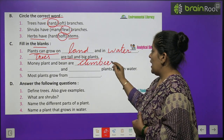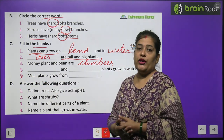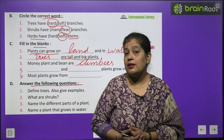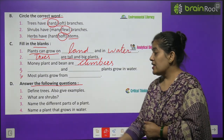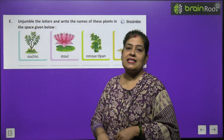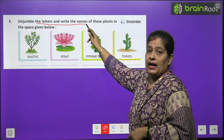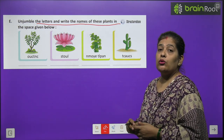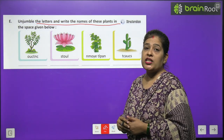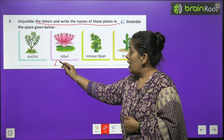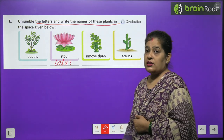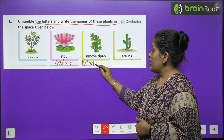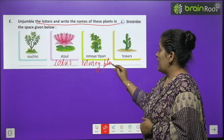Numbers 4 and 5 you will do by yourself. Now for Exercise E: Unjumble the letters and write the name of these plants in the space given. Some plant pictures are given — you have to write their names correctly. Number 2 picture is of Lotus — write L-O-T-U-S. The next picture is of Money Plant — write M-O-N-E-Y P-L-A-N-T. Numbers 1 and 4 you will do by yourself.